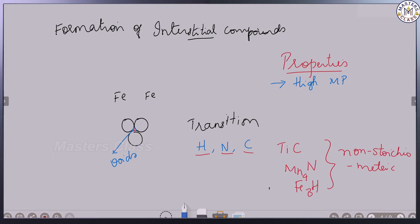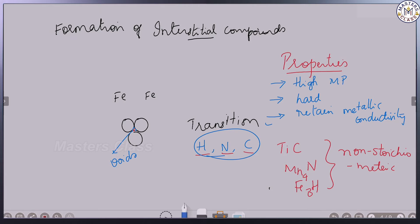The melting point is higher than pure metal. They also introduce hardness — pure metals are very soft, but interstitial compounds are hard. And they do not change the metallic conductivity.